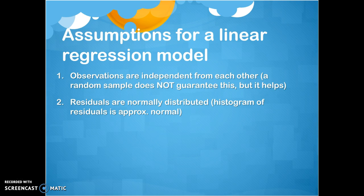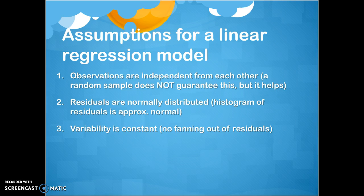We want all of our residuals for all of our data points to be normally distributed. Remember, every data point has a residual — every data point has some amount of error that the line has bestowed upon it. We can gather all those residuals and look at their distribution. We would also like those residuals to have a constant variability as we look across them — we do not want to see any particular pattern in the residuals when we graph them. So: normally distributed residuals and constant variance.